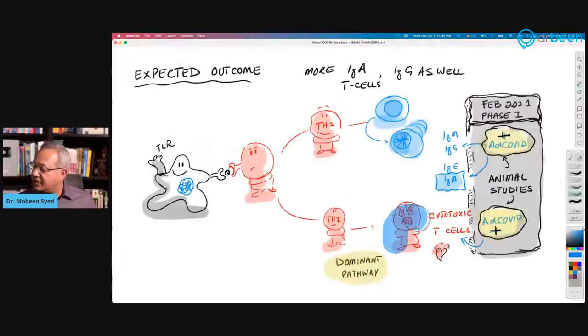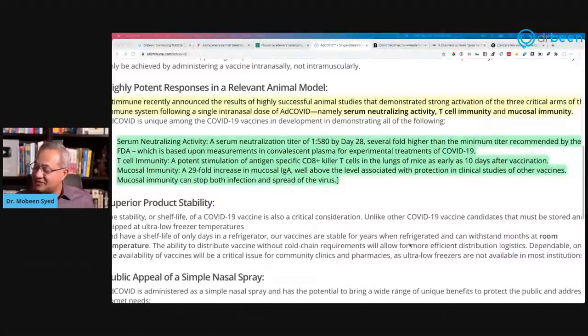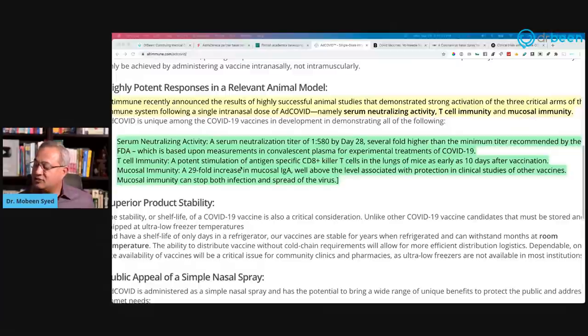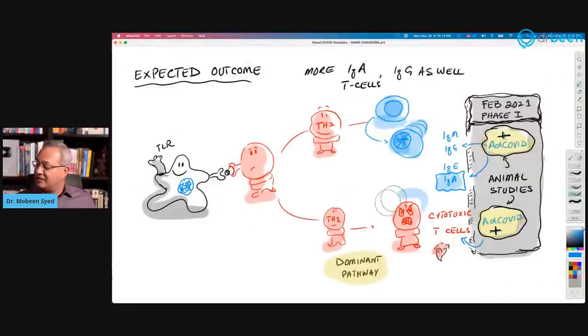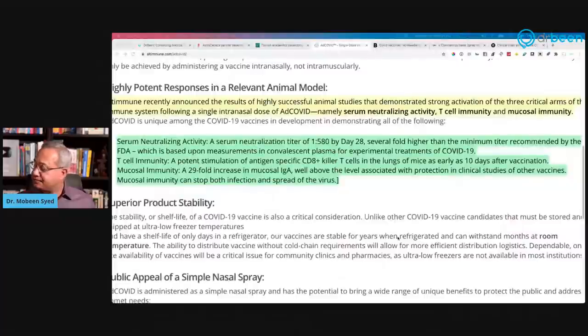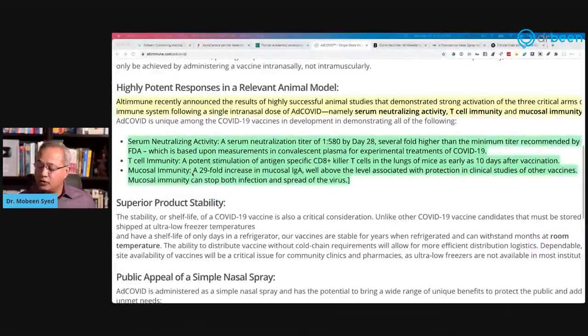So this is several fold higher than the immune titer recommended by FDA. Then T cell immunity. A potent stimulation of antigen specific CD8 plus killer T cells in the lungs of mice as early as 10 days after vaccination. You take the spray today and within 10 days, the T cells, cytotoxic T cells, CD8 plus cells, or CTL cells will be active. Awesome. Love it.